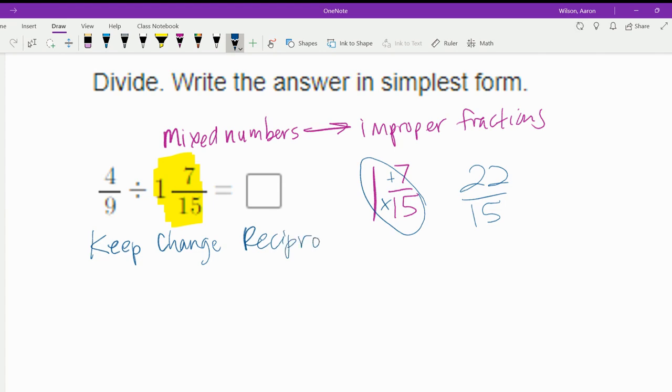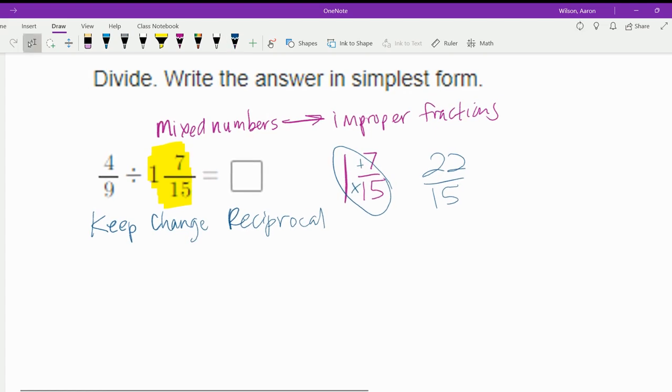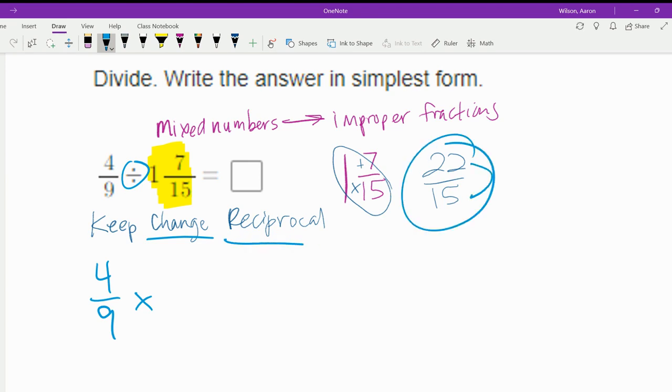This is a trick that works when dividing with fractions. So we're going to keep 4 ninths exactly as 4 ninths. We are going to change the division into multiplication. And then reciprocal is taking a fraction and switching the numerator with the denominator. So 22 fifteenths becomes 15 twenty-seconds.